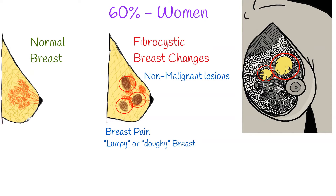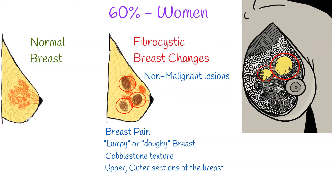Fibrous tissue, cyst formation, and a lumpy cobblestone texture in the breasts are common. These lumps are smooth with well-defined edges and free-moving regarding adjacent structures. They are often found in the upper outer sections of the breast, nearest to the armpit, but can be found throughout the breast.